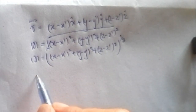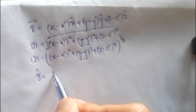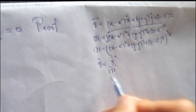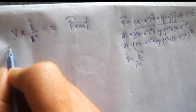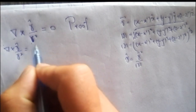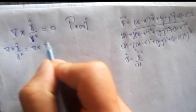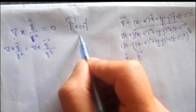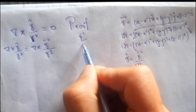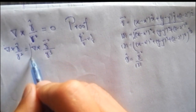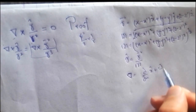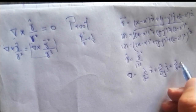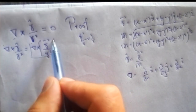According to the definition of unit vector, r-hat equals r-vector divided by the magnitude of r. Substituting the value for r-hat into the equation, we have: del cross (r-hat / r²) equals del cross (r-vector / r³), since r-hat equals r-vector divided by r, multiplied by 1/r. The del operator is equal to (∂/∂x) x-hat plus (∂/∂y) y-hat plus (∂/∂z) z-hat.